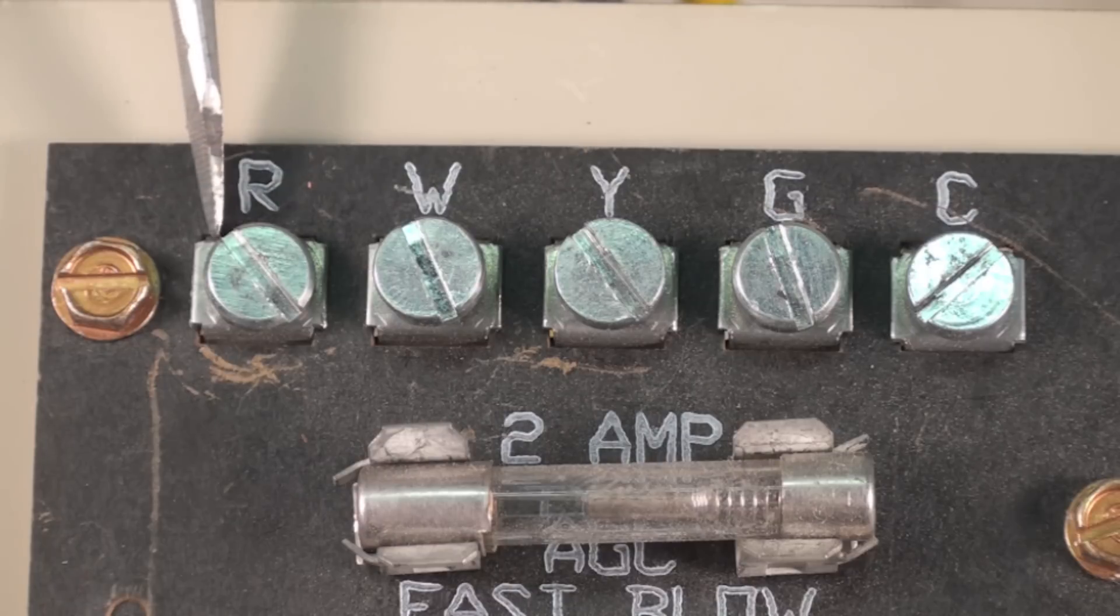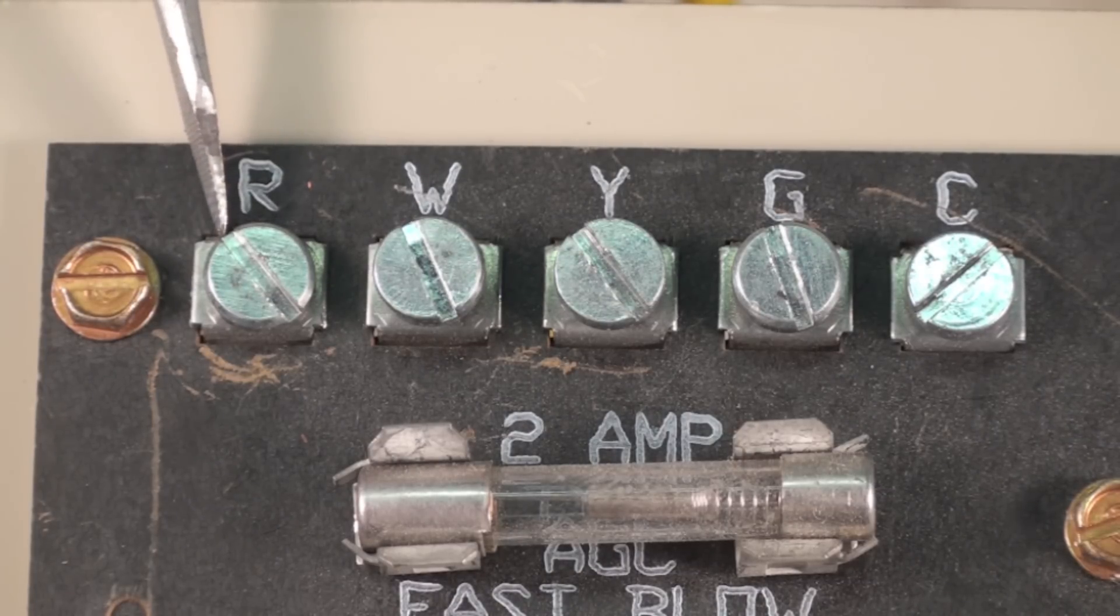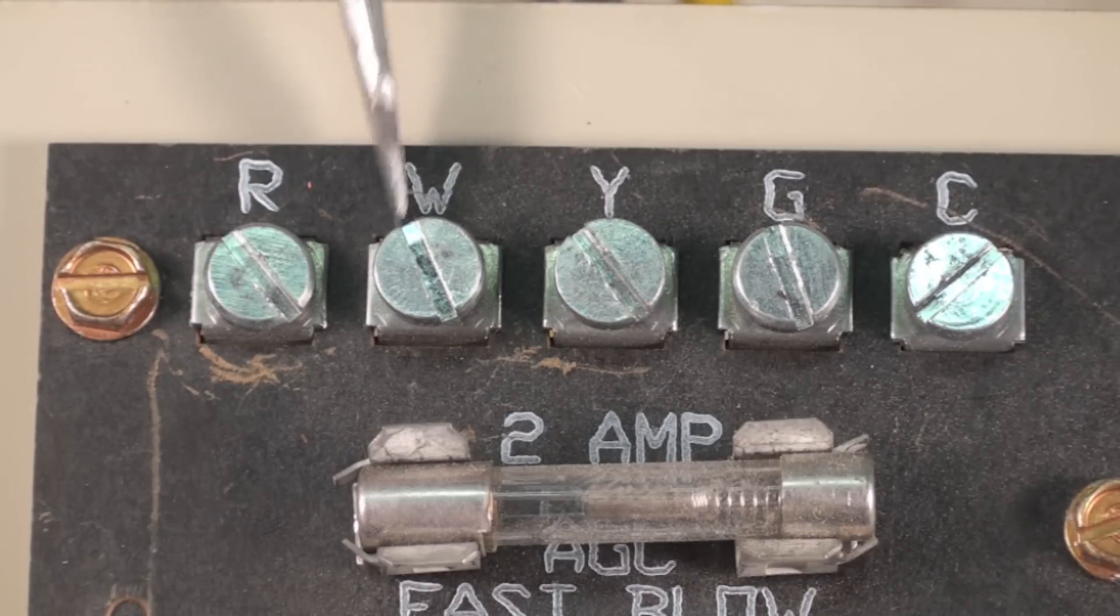So this R would go up to the thermostat and go to R in the thermostat, come out W, which is heat. And so if there was continuity between R and W, you would supply heat signal to the furnace.